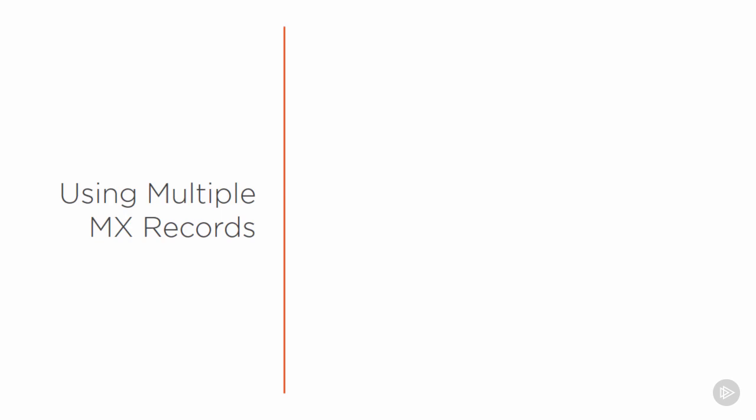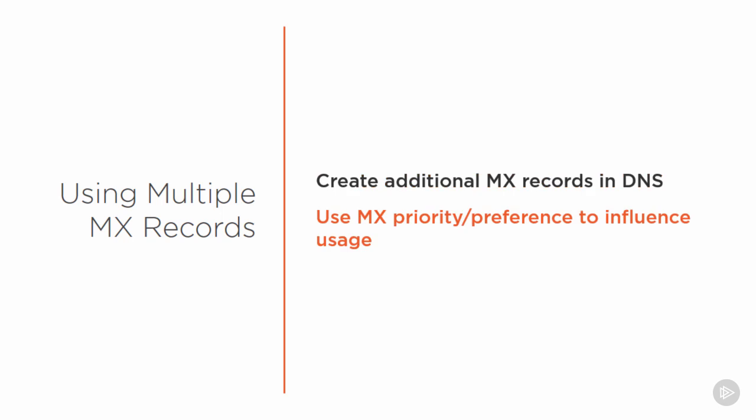Using multiple MX records is actually quite a simple way to achieve high availability for your inbound email routes. All you really need to do is add more than one MX record in DNS and point that to another public IP address that NATs to another Exchange server. But then you also need to think about how you want those MX records to be used. Each MX record has a priority, and there are a few ways you can use that priority or preference value to influence how the MX records are used by other email servers that are sending you email.